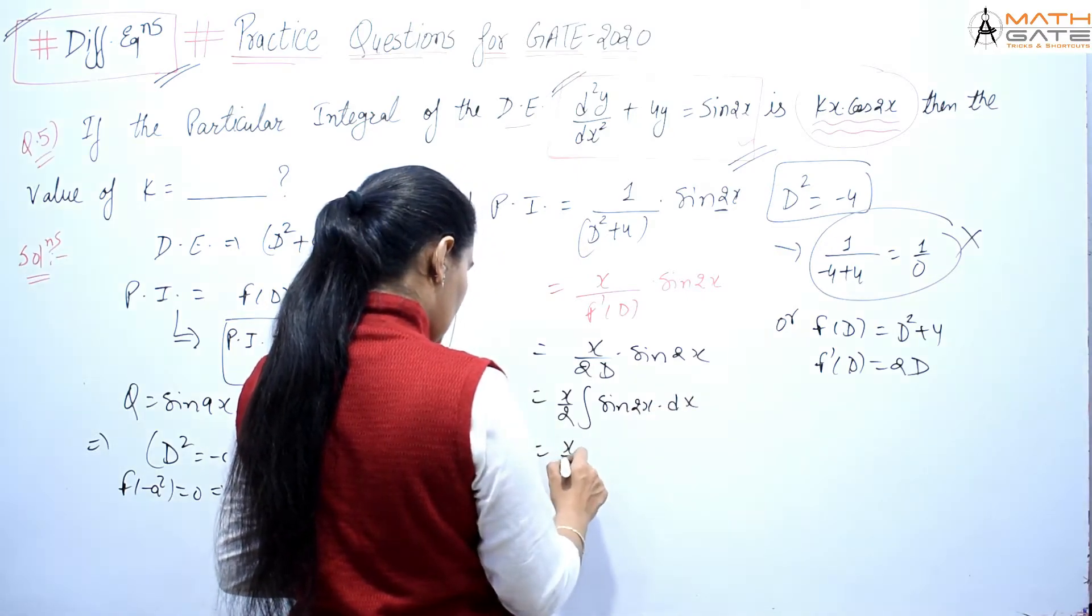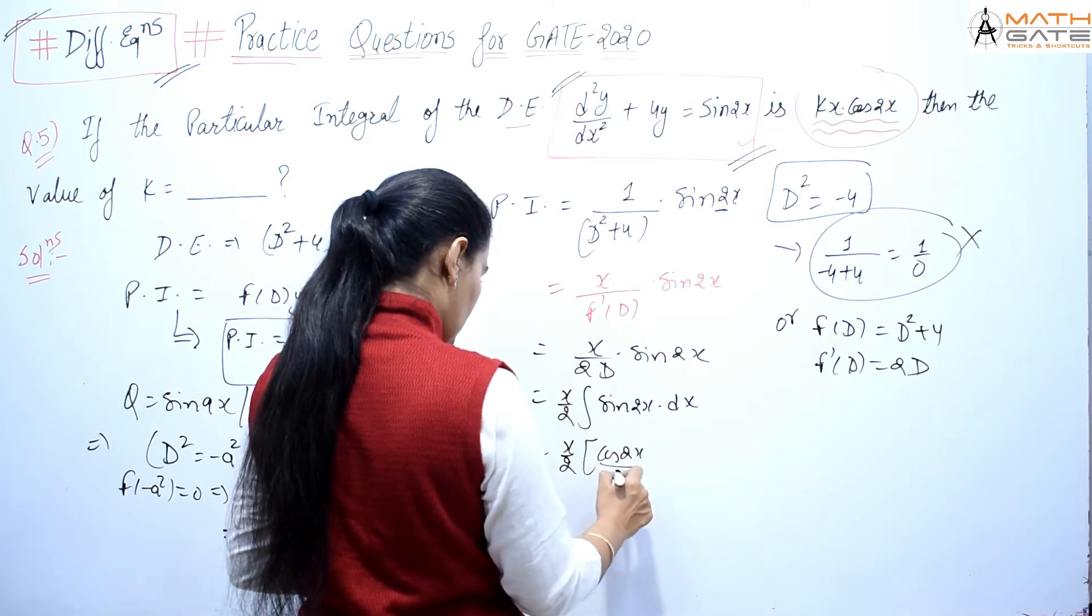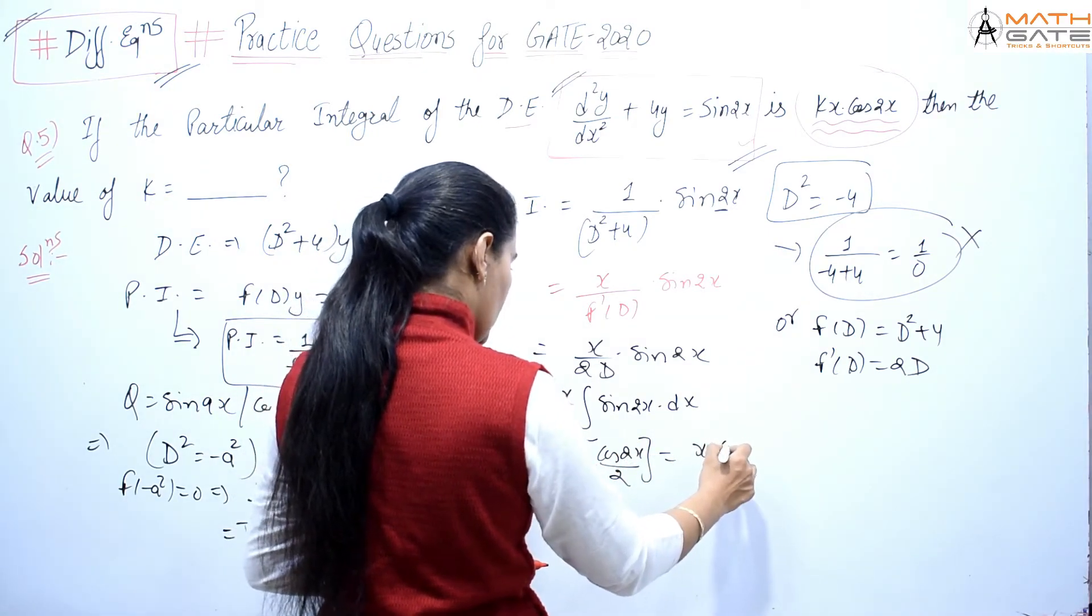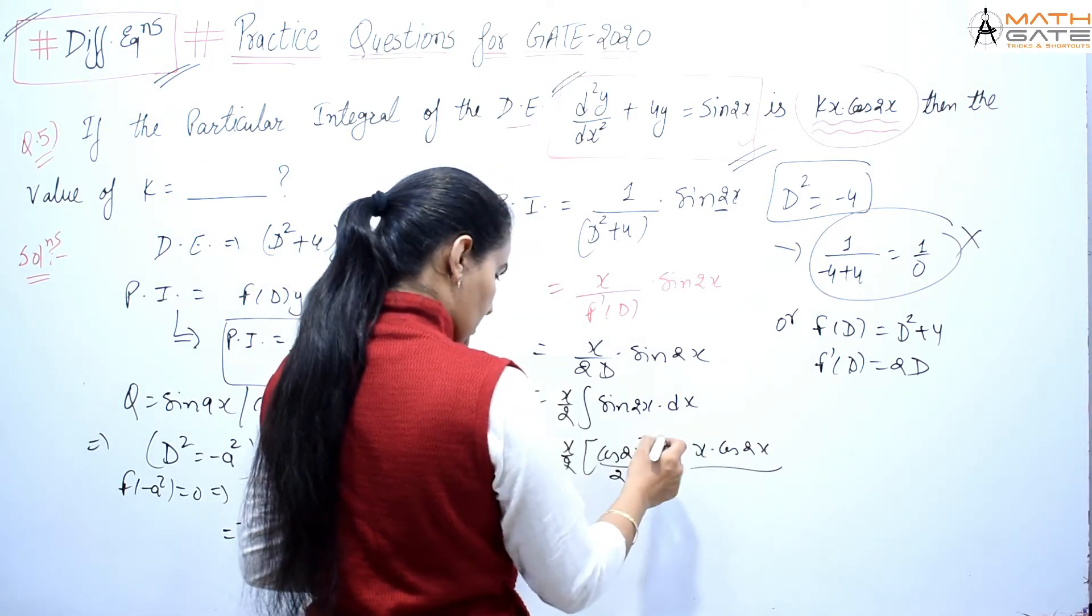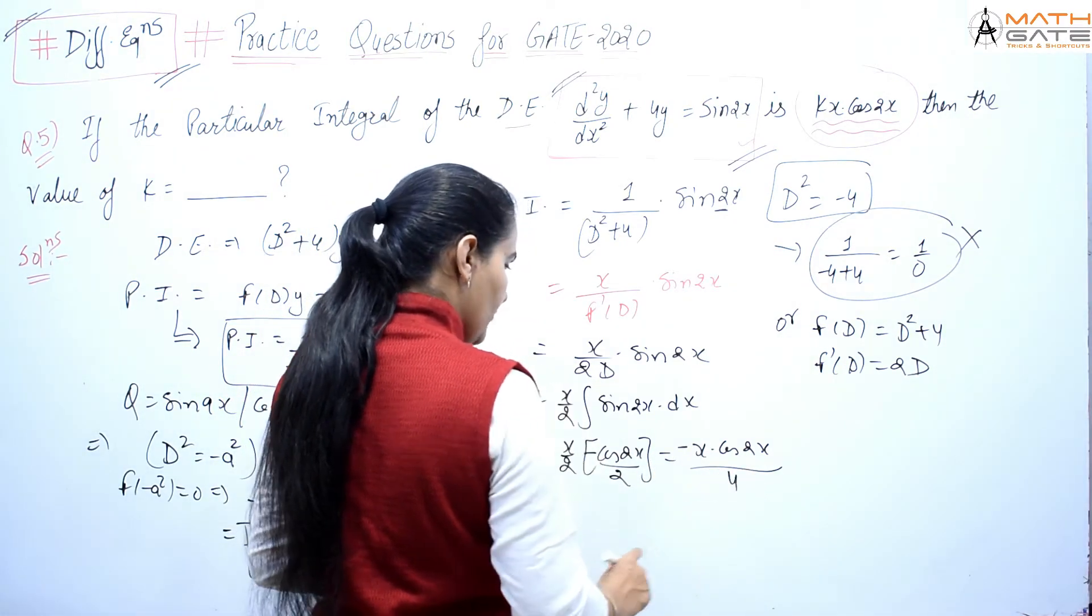So this is x/2 times cos(2x)/2. So that equals -x cos(2x)/4.